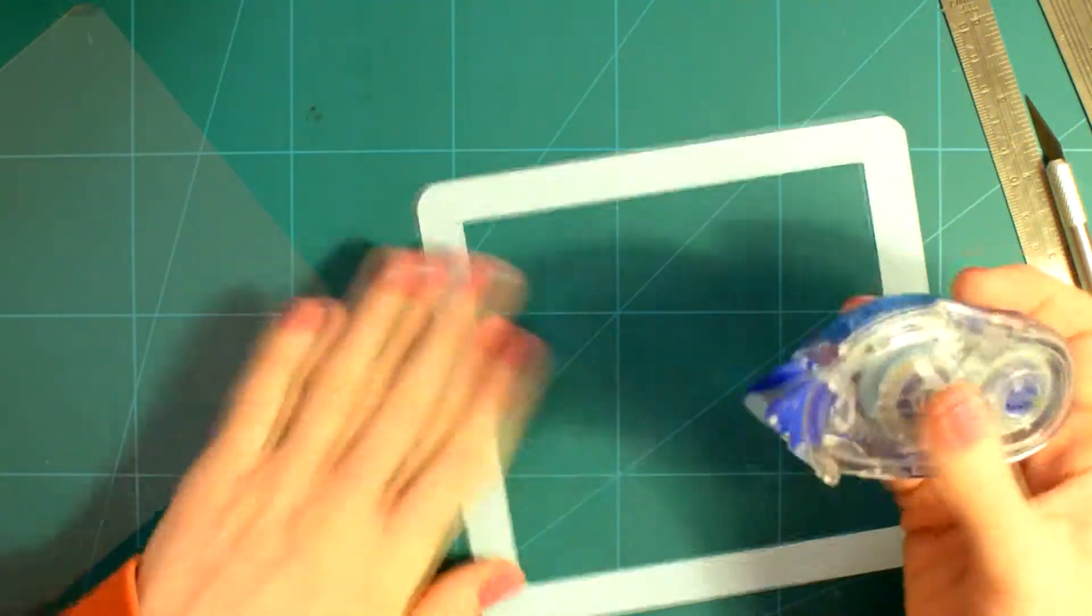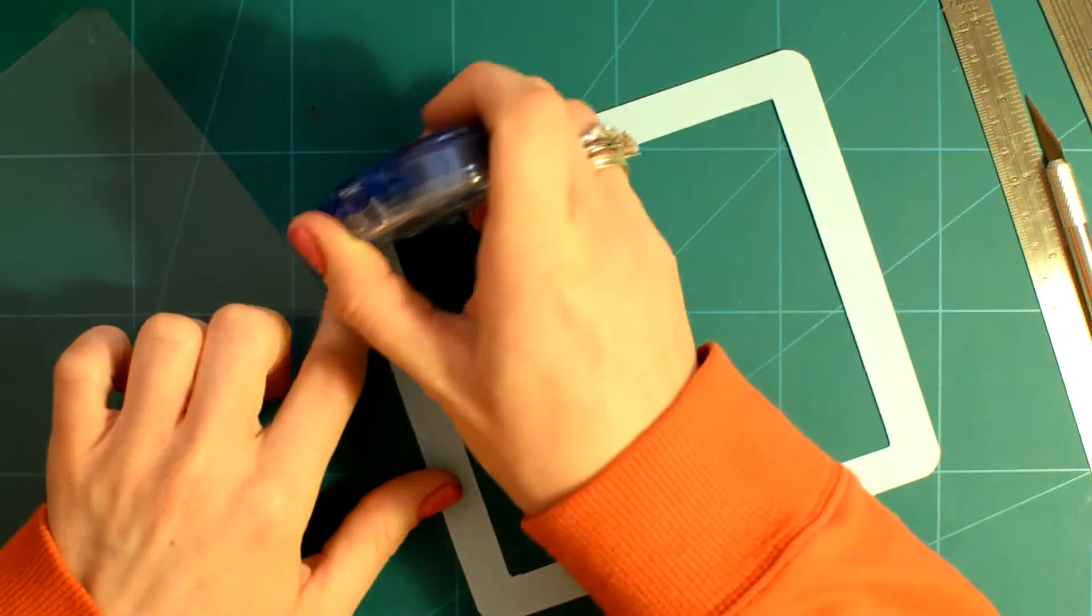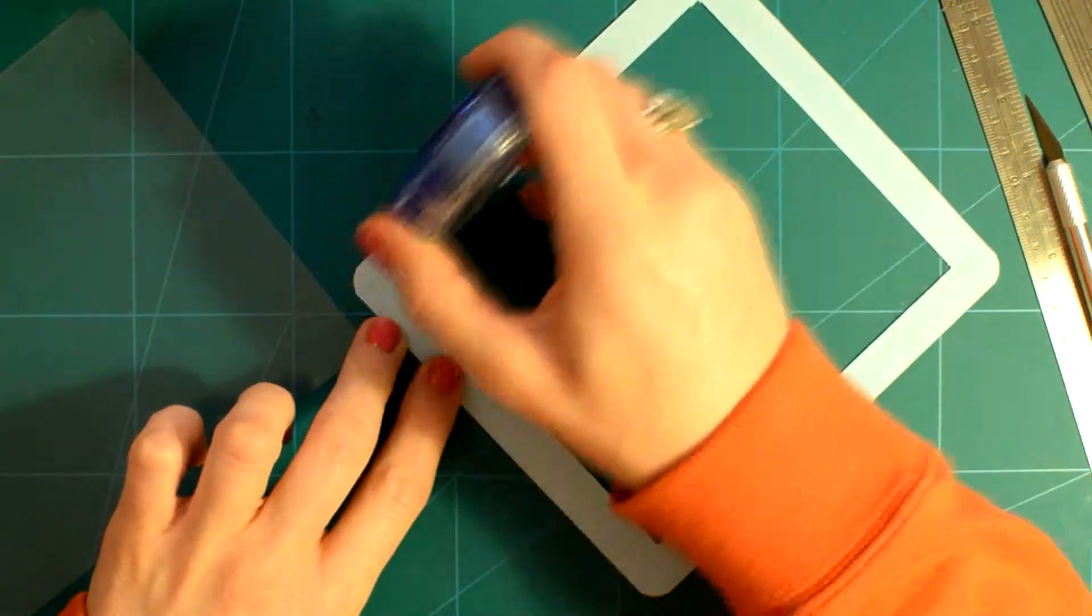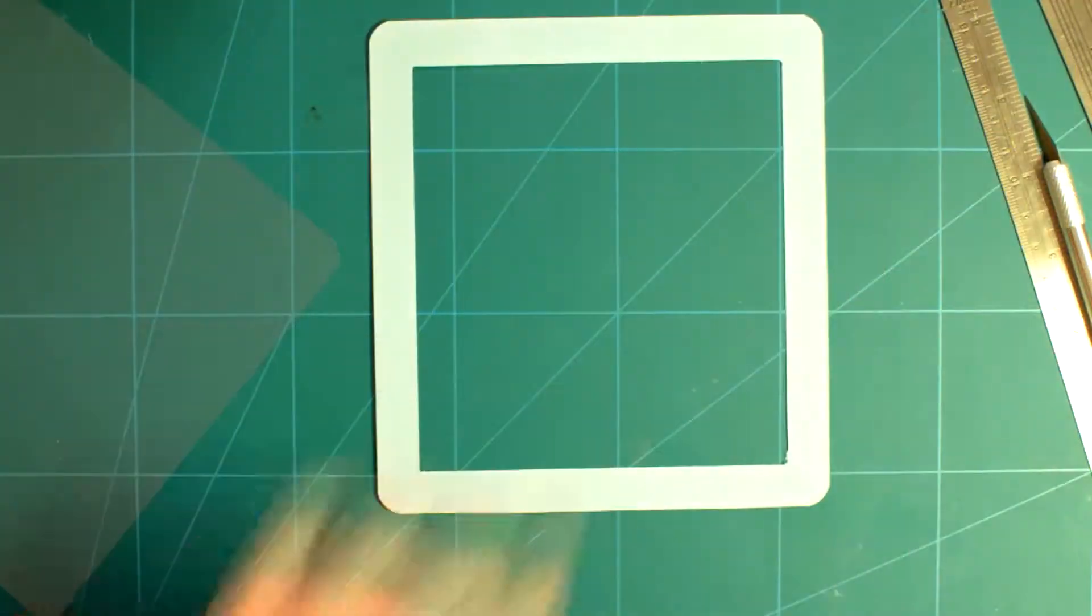I used Tombow Runner tape to adhere the clear sheet in the frame for the front of the card, and I also used it to adhere the DSP on the cover.